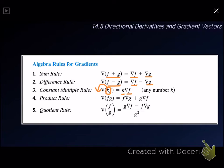The fourth rule is the product rule. If we have a product between f and g, and we would like to find the gradient of fg, it will equal f multiplied with gradient of g, plus g multiplied with gradient of f.